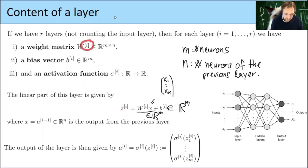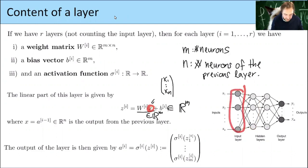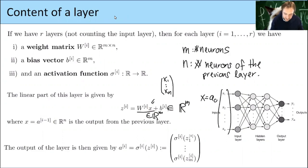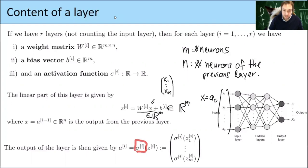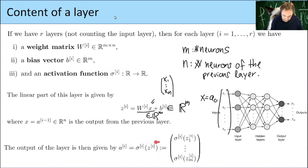Using square bracket notation to denote which layer we are in: when we are in the first layer, the input x is the output of the input layer, so x is A zero. After calculating the linear part Z — a vector of size m where m is the number of neurons — the output of this layer is obtained by applying the activation function at each entry. Even though sigma is a function from R to R, applying it to a vector means applying it component-wise.